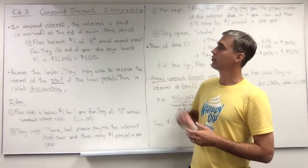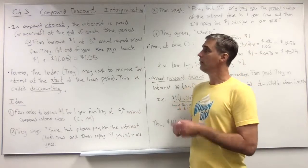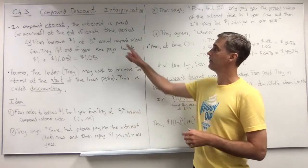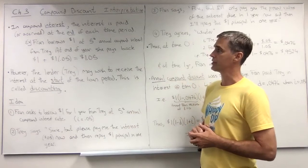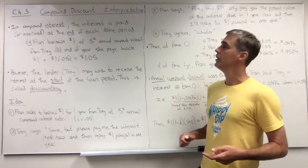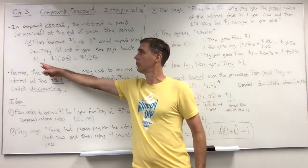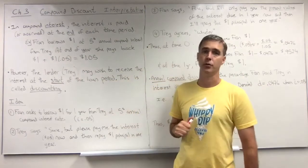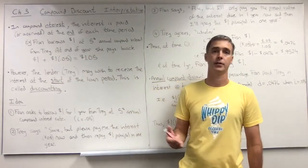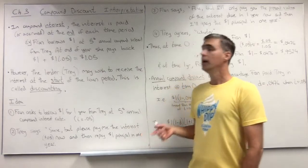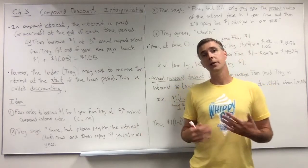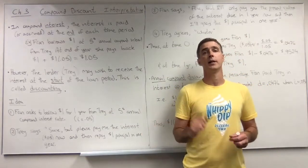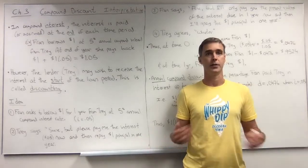So for example, Fran could borrow one dollar for one year from Trey at five percent annual compound interest, and at the end of that one year she would pay back the one dollar principal and five percent more, so a dollar and five cents back to Trey at the end of one year. Now Trey might not like this idea. From his perspective, he's giving money away at time zero and getting nothing back until time one.